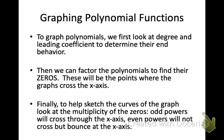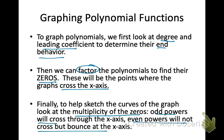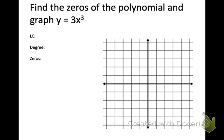Here is the method to graph polynomials. First, look at the degree and leading coefficient to determine end behavior. Then factor to find x-intercepts. Finally, use multiplicity to determine whether the graph crosses or bounces at each zero. We're putting all of these concepts together.